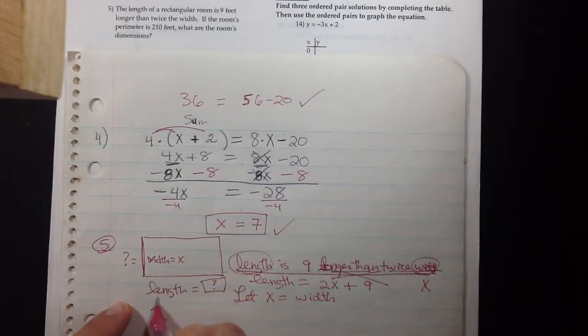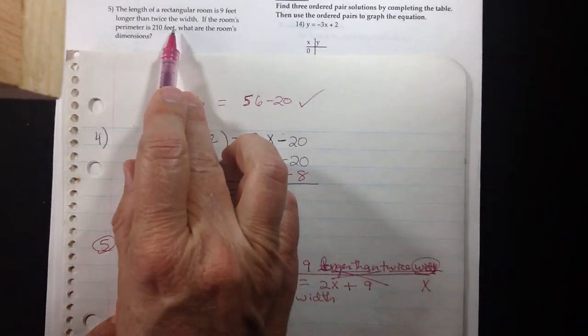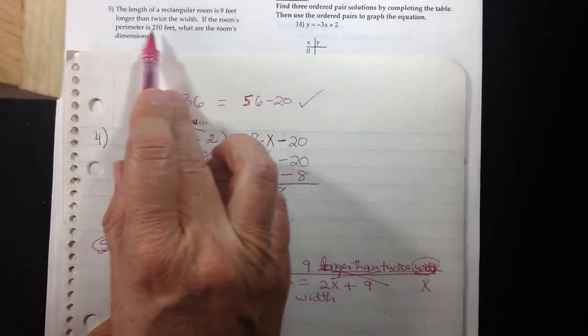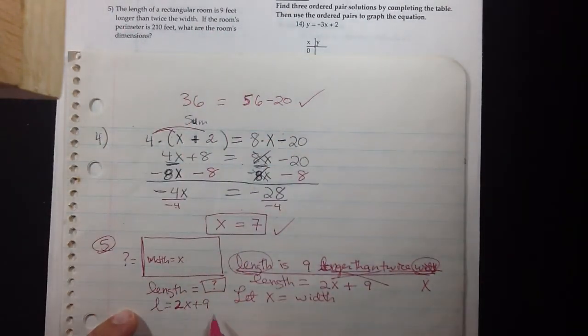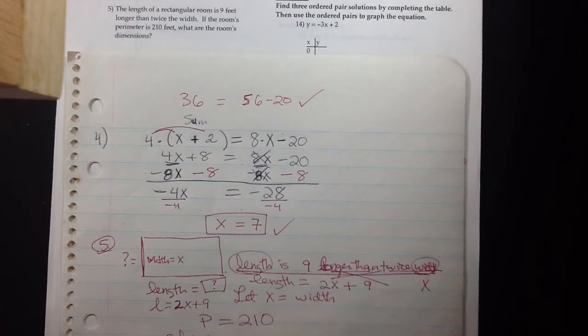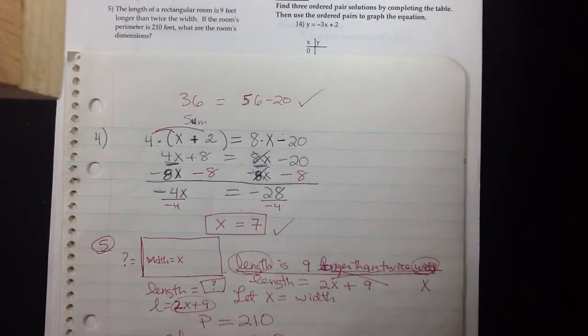So what we have here is width is this X and length is the 2X plus nine. And now that other part of this story says if the room's perimeter is 210, so when perimeter is 210 we can replace perimeter with twice the length plus twice the width. That's the formula for a perimeter of a rectangle. And so 2 times a length, that's 2X plus 9, plus 2 times a width, a width that is X units long, has to total to 210.